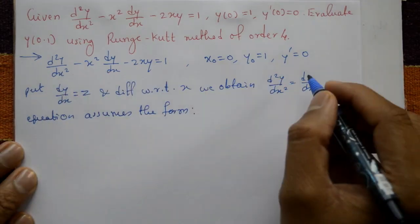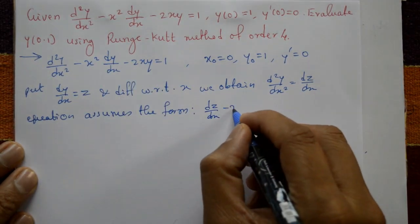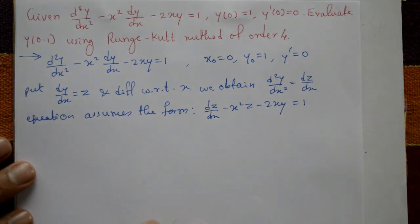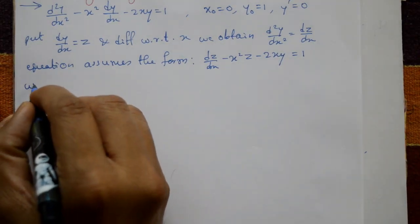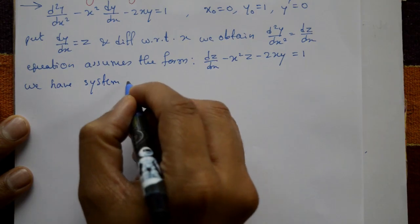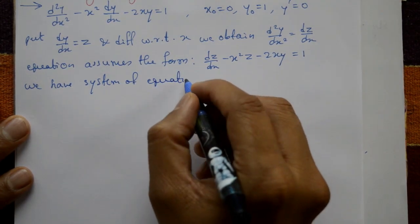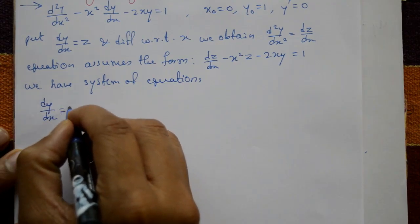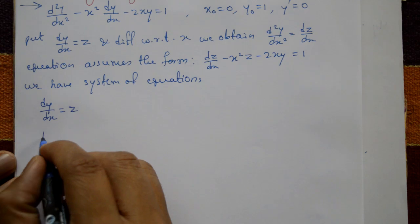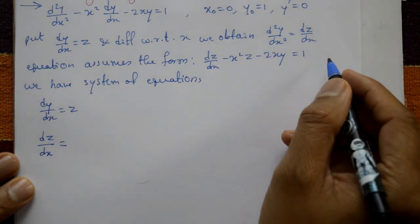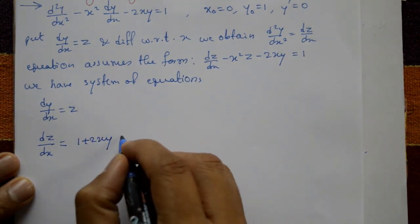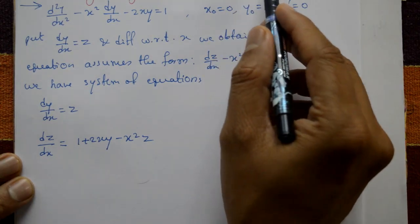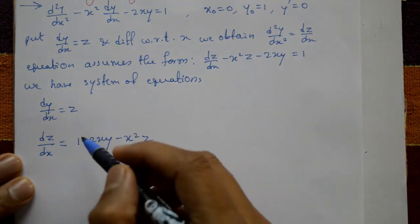Substituting, d²y/dx² becomes dz/dx, so the equation assumes the form: dz/dx minus x²z minus 2xy equals 1. We now have a system of two equations: dy/dx = z, and dz/dx = 1 + 2xy minus x²z. The second-order equation with two initial conditions is reduced to two first-order differential equations.